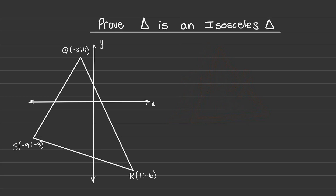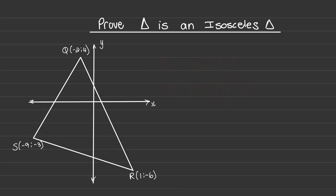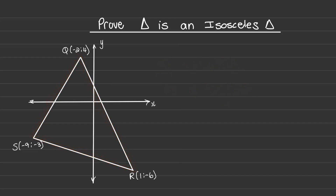Looking at our diagram, sometimes you would need to calculate all three distances and find two sides that are equal in length. We are going to focus on the length of SR and then compare that to the length of QR.